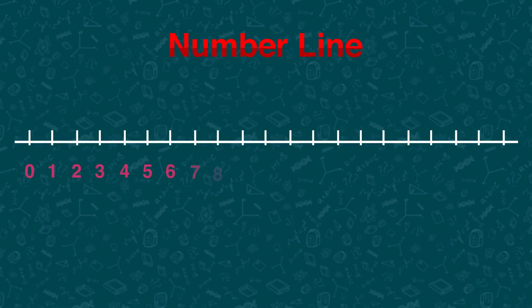The number line is like a ruler. It helps us see numbers in the order in which we count them, starting from zero.